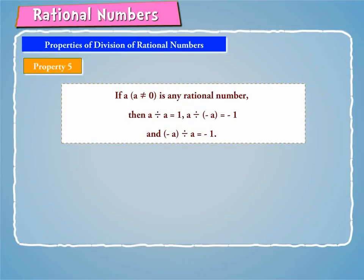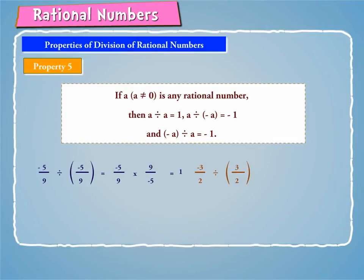Property 5: If A is any rational number where A is not equal to 0, then A divided by A is equal to 1, A divided by minus A is equal to minus 1, and minus A divided by A is equal to minus 1. To understand this, let us consider the following example. Minus 5 by 9 divided by minus 5 by 9 equals minus 5 by 9 into 9 by minus 5, which gives us 1. Minus 3 by 2 divided by 3 by 2 equals minus 3 by 2 into 2 by 3, which equals minus 1. Also, 4 by 5 divided by minus 4 by 5 equals 4 by 5 into 5 by minus 4, which equals minus 1.